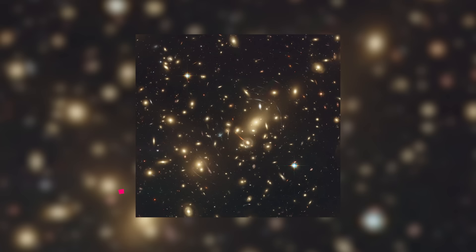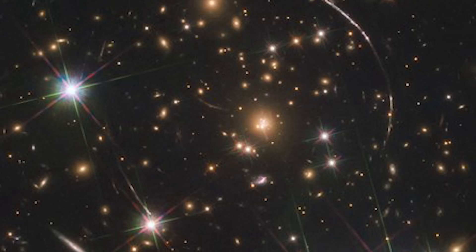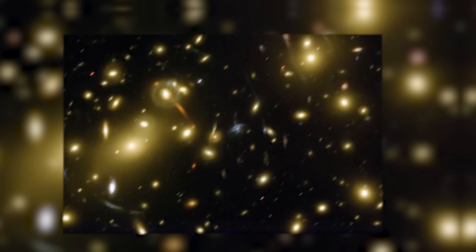Number 9. Abel-2218. The picture shows Abel-2218, a rich galaxy cluster composed of thousands of individual galaxies. It sits about 2.1 billion light-years from the Earth in the northern constellation of Draco.